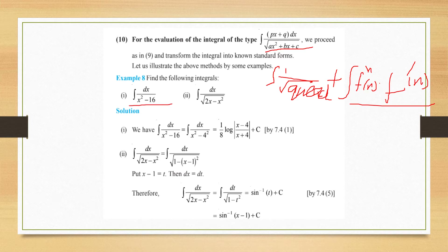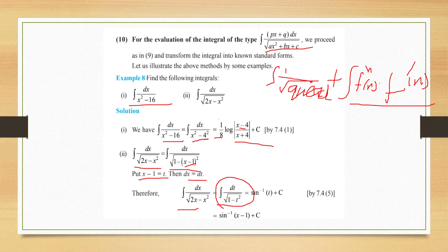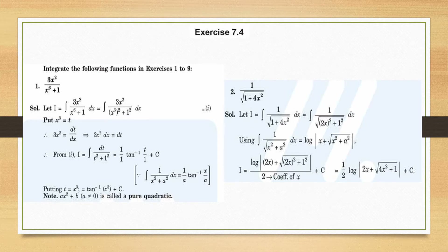Let us quickly see an example. For 1/(x² − 16), write it as 1/(x² − 4²). Applying formula 1 with a = 4, the answer is (1/8) log|x − 4 / x + 4| + C. The next example, dx/(2x − x²), requires completing the square: this changes to 1/√(1 − (x−1)²). Putting x − 1 = t gives dt/√(1 − t²), which gives sin⁻¹(t) + C = sin⁻¹(x − 1) + C.